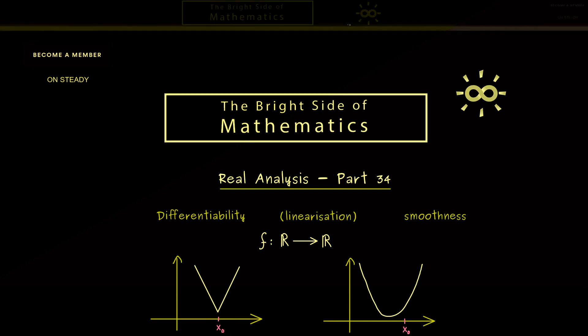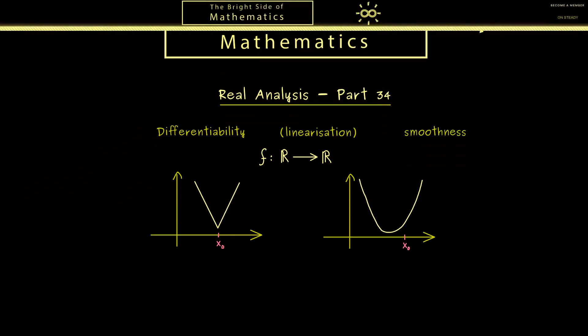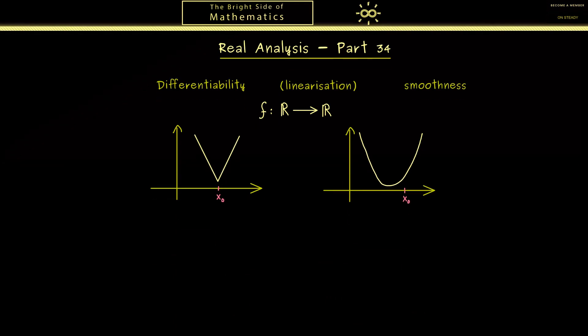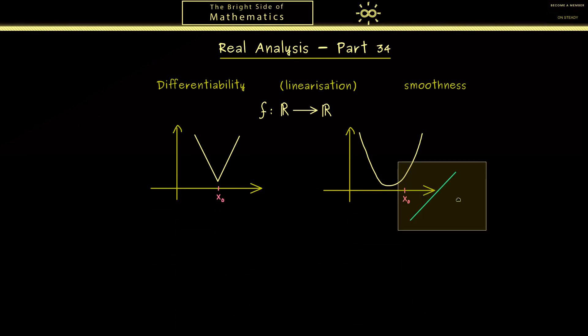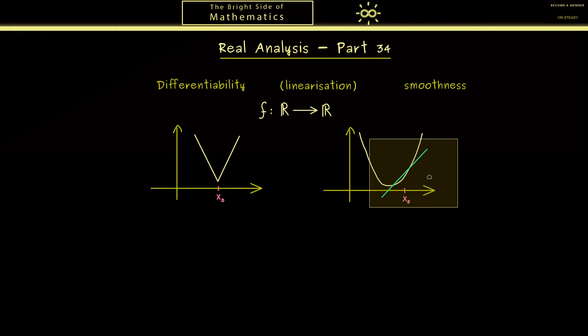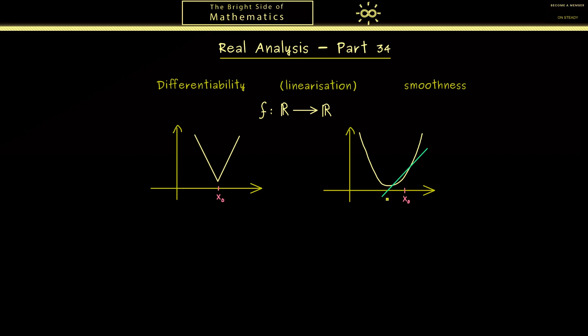So you might already know that differentiability has something to do with the slope at a given point. Hence do we have a slope for this point and do we have a slope for that point. Now for getting a value for this slope we would take a line to approximate this number. So the red line here would be the graph of a linear function where we explicitly have a slope.